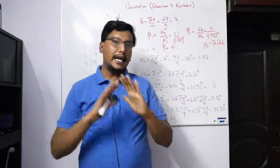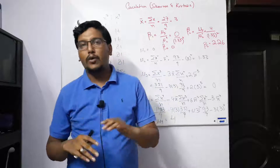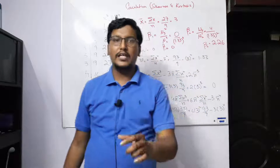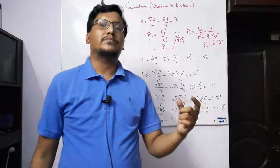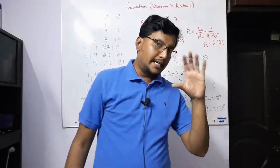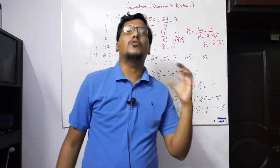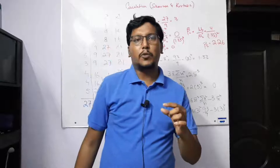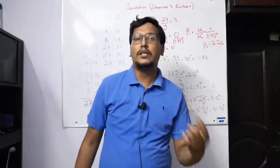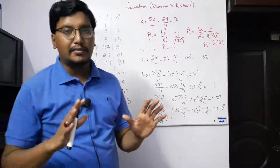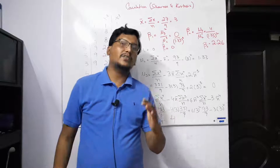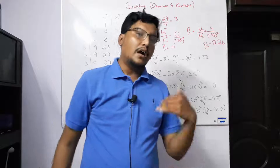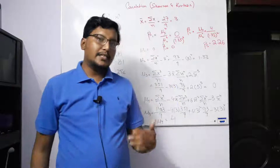If we want to find out the symmetry of the data — whether the data is symmetrical or asymmetrical — we have to find out the skewness of the data. Skewness is calculated with the help of moments. If beta 1 is equal to 0, the data is perfectly symmetric. If beta 1 is greater than 0, there is positive skewness, and if less than 0, there is negative skewness.